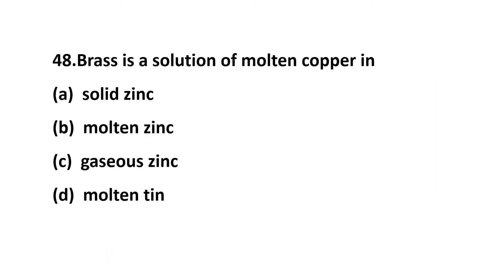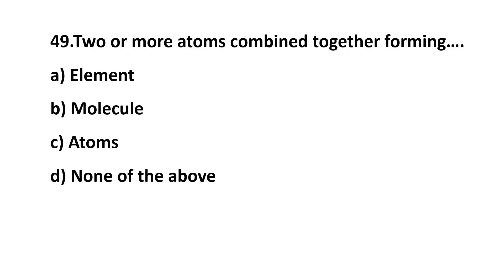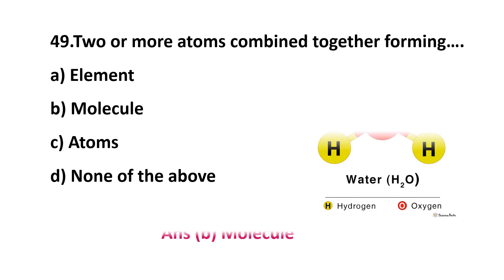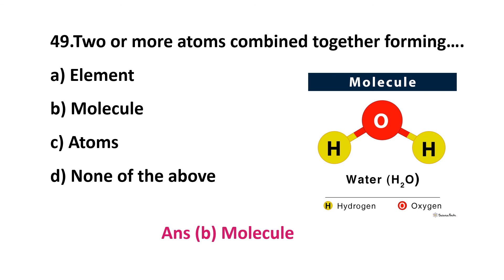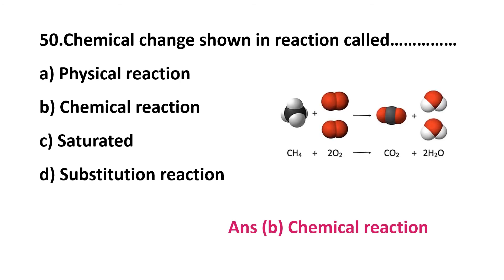Question 48: brass is a solution of molten copper in — solid zinc, molten zinc, gaseous zinc, or molten tin? The correct answer is option B: molten zinc. Question 49: two or more atoms combined together form — element, molecule, or atoms? The answer is option B: molecule. Question 50: a chemical change shown in a reaction is called — physical reaction, chemical reaction, saturated reaction, or substitution reaction? The answer is option B: chemical reaction.